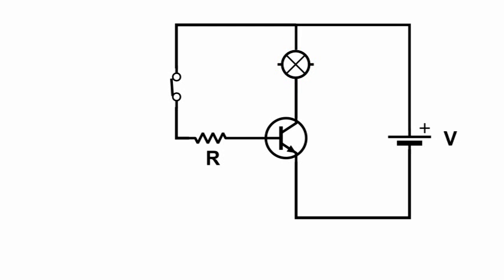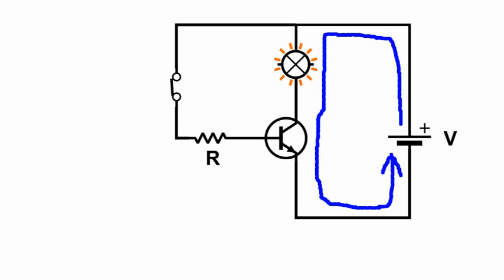When the physical switch is closed, a current IC circulates through the lamp and the transistor. The magnitude of IC depends on the base current of the transistor, IB. IB should be large enough for the transistor to enter saturation.